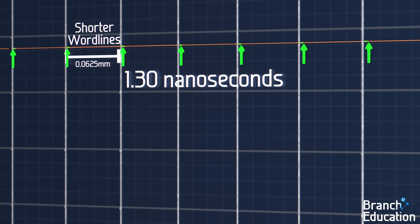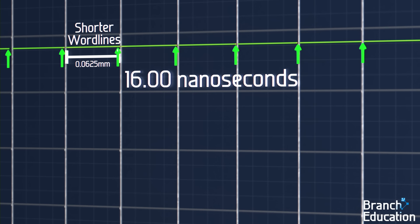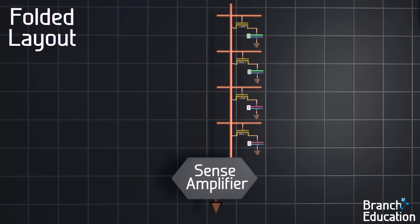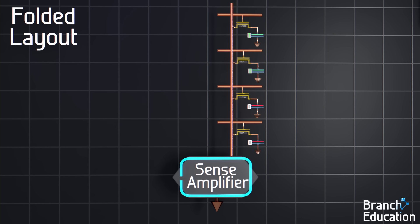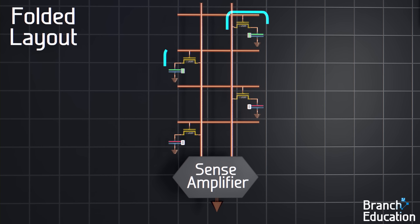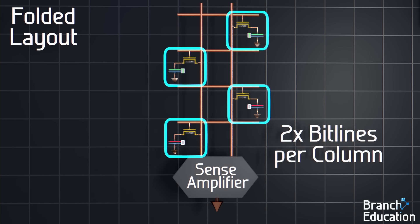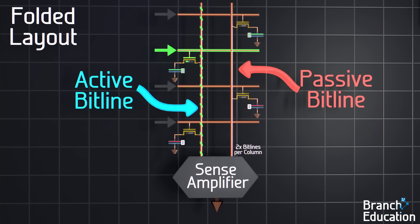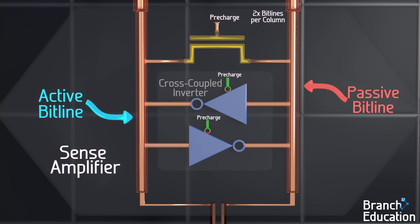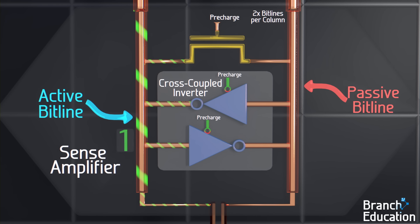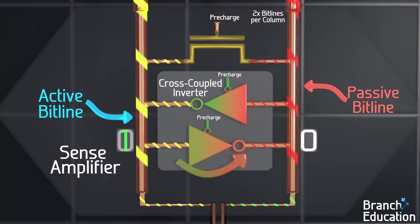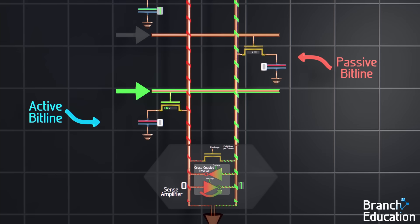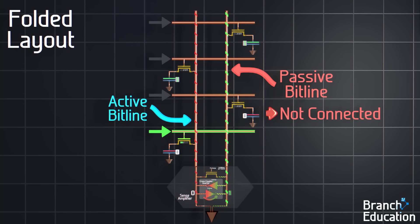The final topic we're going to talk about is the most complicated. Remember how we had a sense amplifier connected to the bottom of each bitline? This optimization has two bitlines per column going to each sense amplifier, and alternating rows of memory cells connected to the left and right bitlines, thus doubling the number of bitlines. When one row is active, half of the bitlines are active while the other half are passive, and vice versa when the next row is active. Moving down to see inside the sense amplifier, we find a cross-coupled inverter. When the active bitline is a 1, the passive bitline will be driven by this cross-coupled inverter to the opposite value of 0, and when the active is a 0, the passive becomes a 1. Note that the inverted passive bitline isn't connected to any memory cells, and thus it doesn't mess up any stored data.